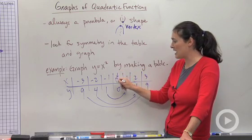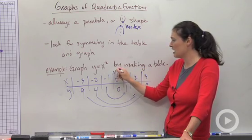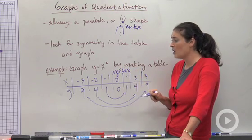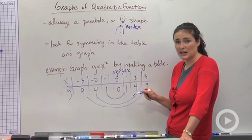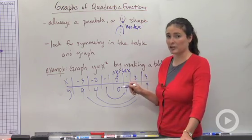Also, this thing right here that's in the middle of the symmetry, you'll start seeing is the vertex. What I'm going to do is put these points on the graph and show you what the parabola U shape looks like.